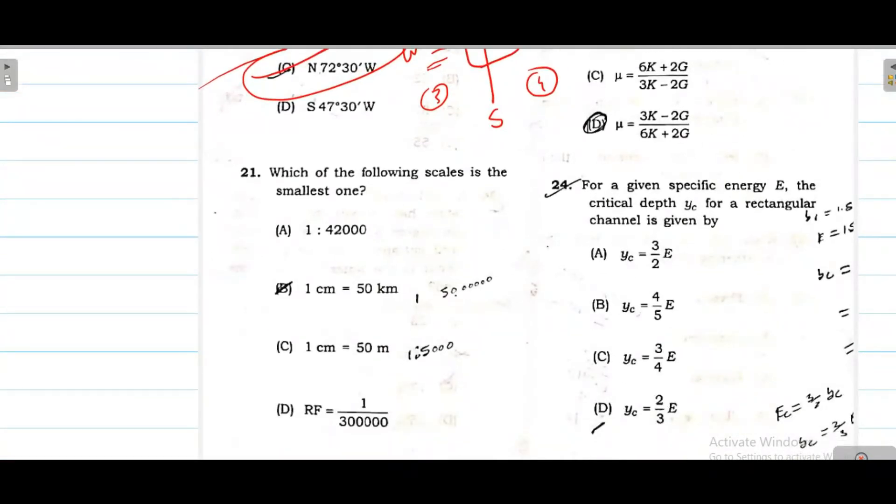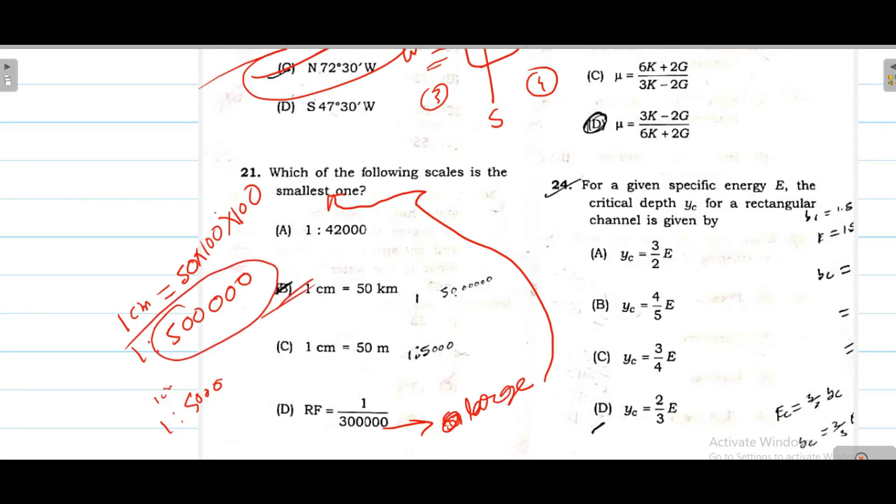Which of the following scale is smallest? These are RF values given. We have to see which denominator value is largest. The larger the denominator, the smaller the scale. The smaller the denominator, the larger the scale, which means the scale is smallest. This is one is to 400,000. If we convert, one centimeter equals fifty kilometer. If we change to centimeters and meters, ultimately one is to five million. Similarly one centimeter to 50 meters, then one is to five thousand. The largest value is option B, so option B is correct.